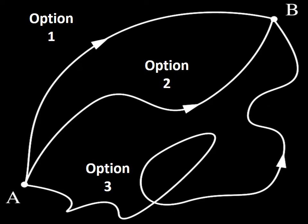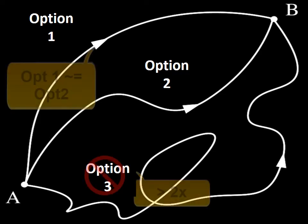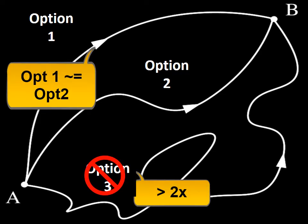For instance, in this project we have three options: option one, option two, and option three. Even with the most rudimentary estimates and expert guesses, we can see that option three is at least two times longer than option one or two.